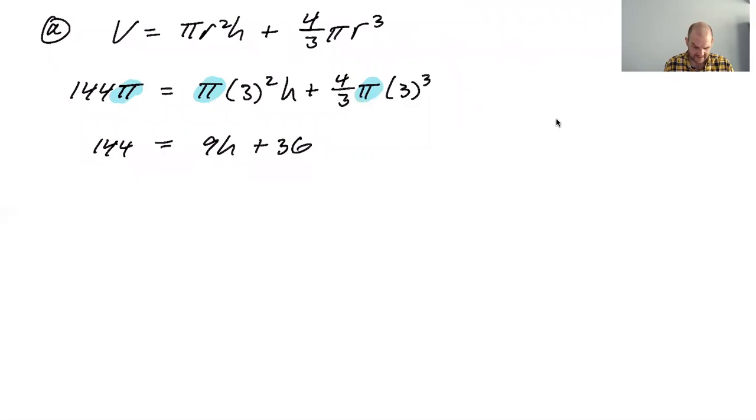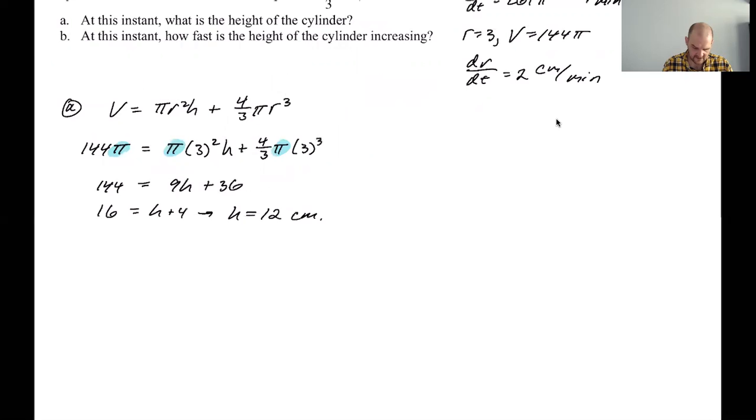So there's a pi everywhere. So we can just cancel those out. So 144 equals nine h plus three cubed gives me three squared, which is nine times four is 36. So plus 36. I think I can divide everything by nine. 144 is 12 squared. So if I divide everything by nine, I would get 16 equals h plus four.